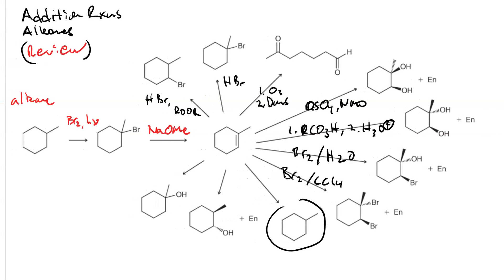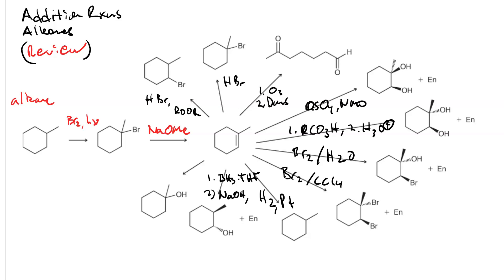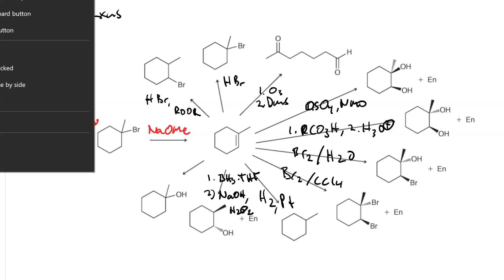To get back to the alkane we would do catalytic hydrogenation: H2 and Pt, or H2 and Pd. To get the anti-Markovnikov alcohol we would use hydroboration-oxidation: first BH3·THF, then sodium hydroxide and hydrogen peroxide.